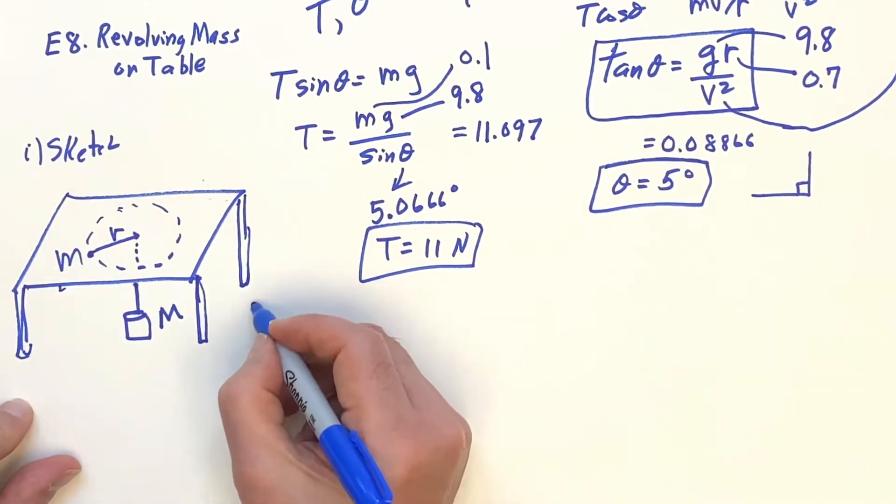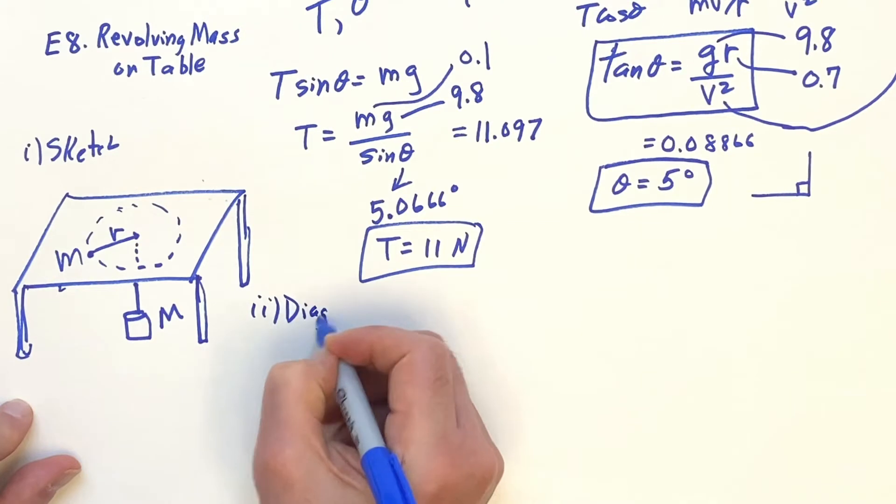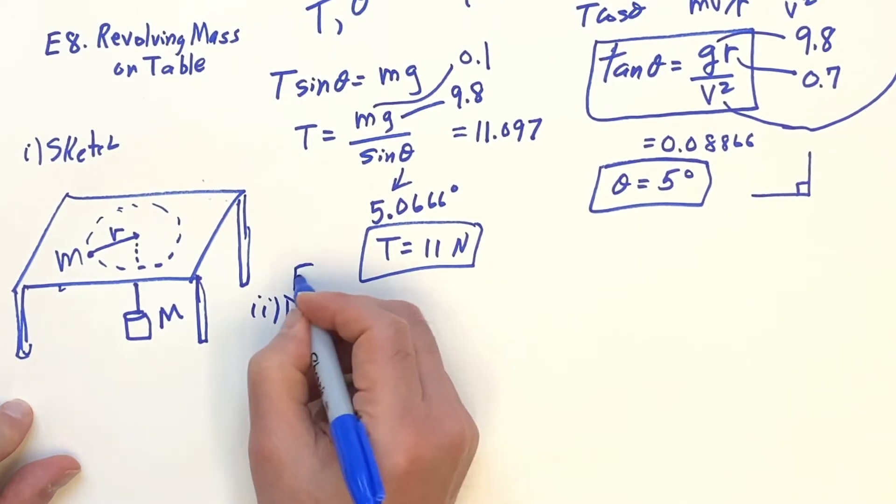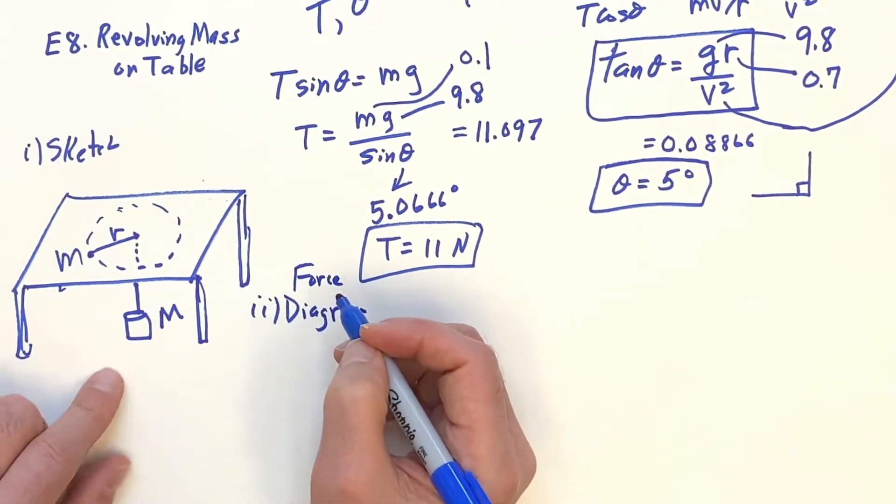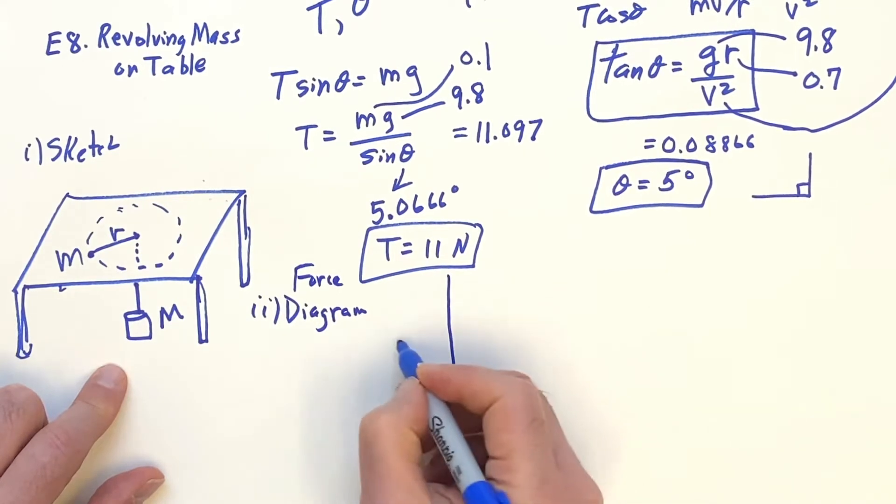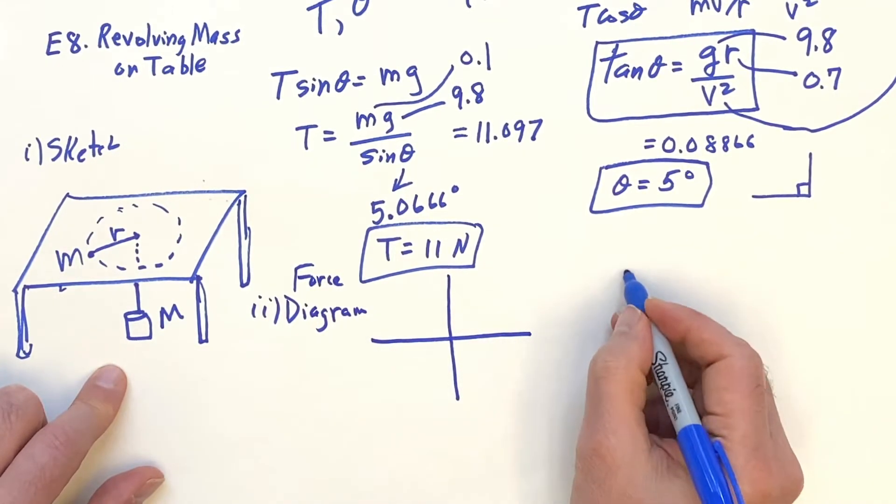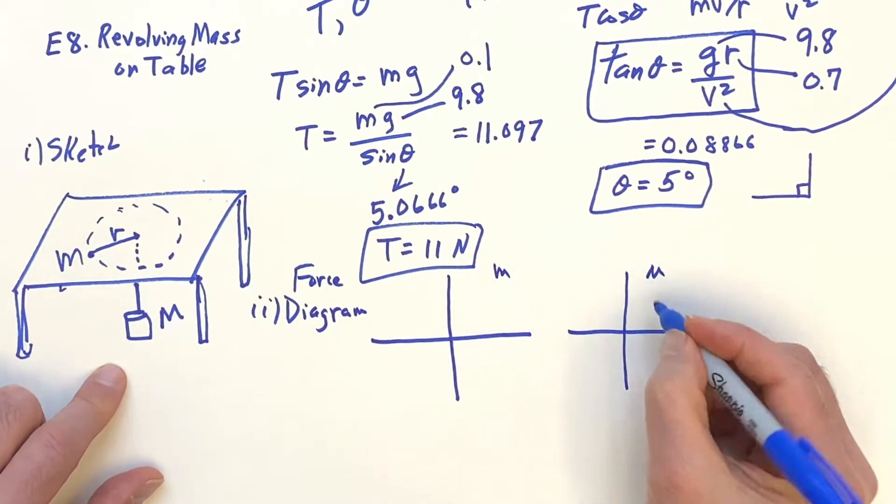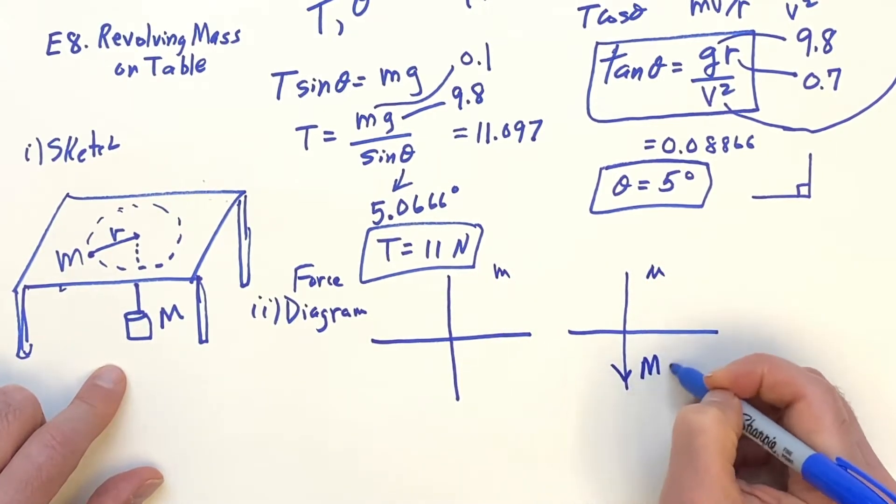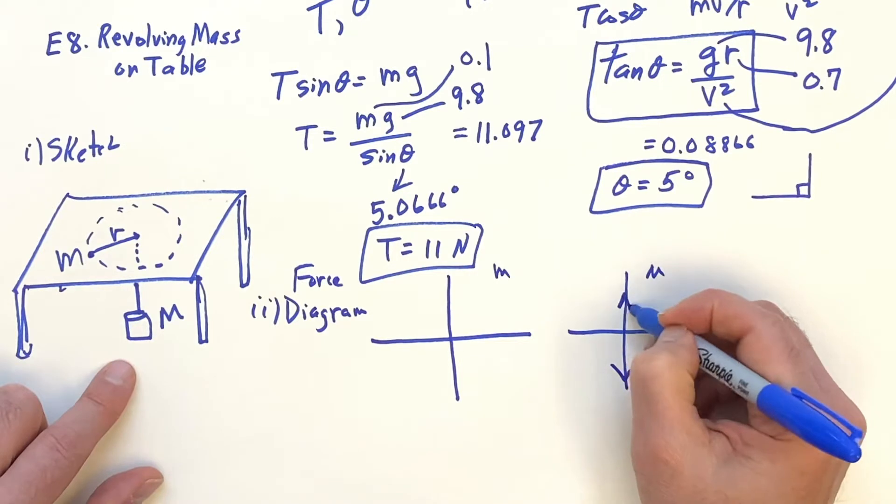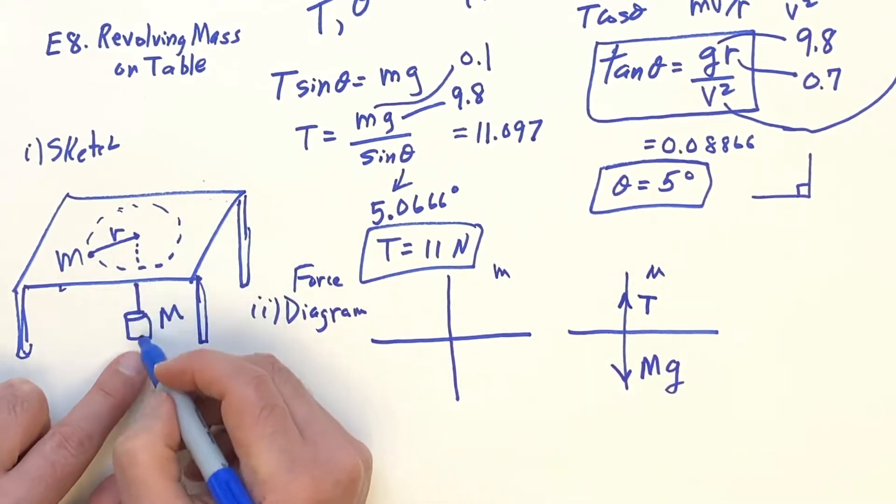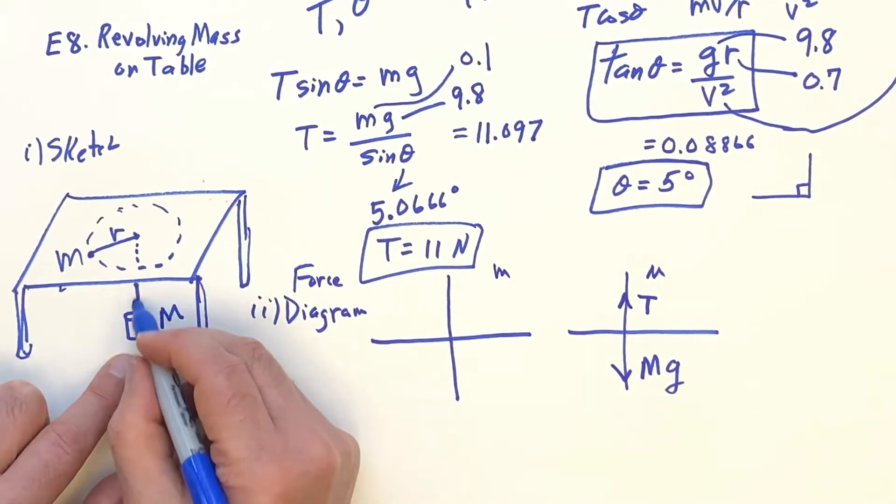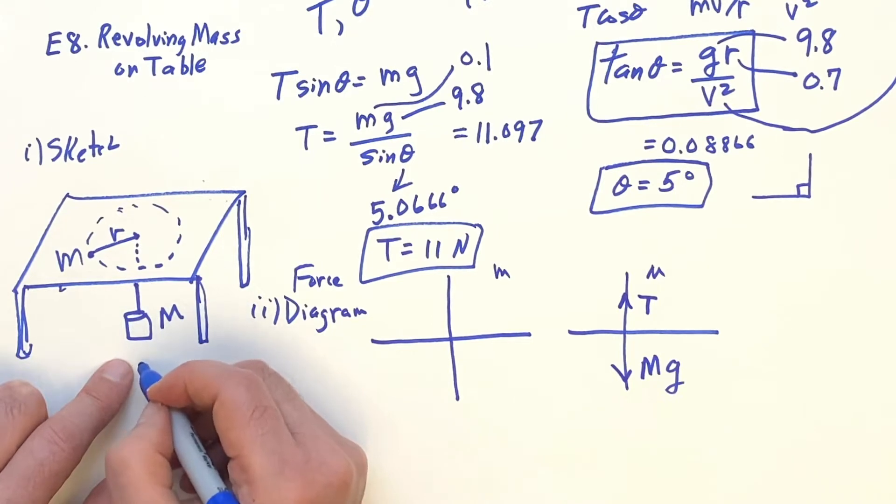So then we need to have the force diagram. There's two masses. This is for the little m. This is for the big M. The big M is very easy. Big Mg is down. You got the tension going up. Tension going up in the rope, and the big Mg going down.